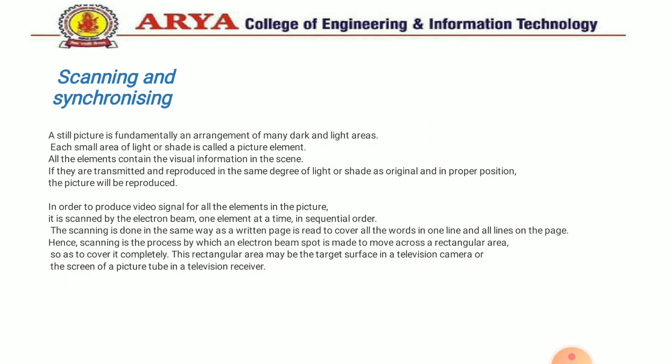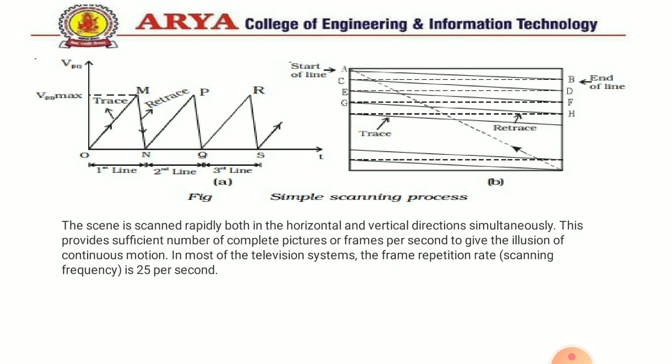The scanning is done in the same way as a written page is read, covering all the words in one line and all lines on the page. Scanning is the process by which an electron beam spot is made to move across a rectangular area so as to cover it completely. This rectangular area may be the target surface in a television camera or the screen of a picture tube in a television receiver.